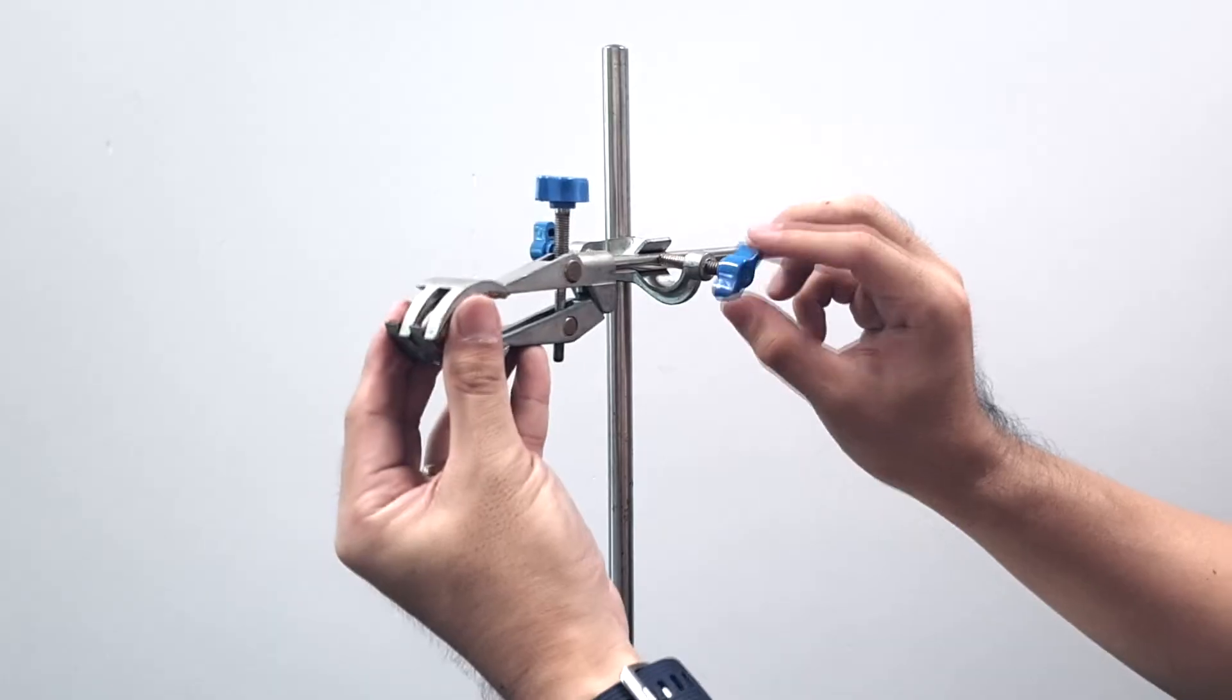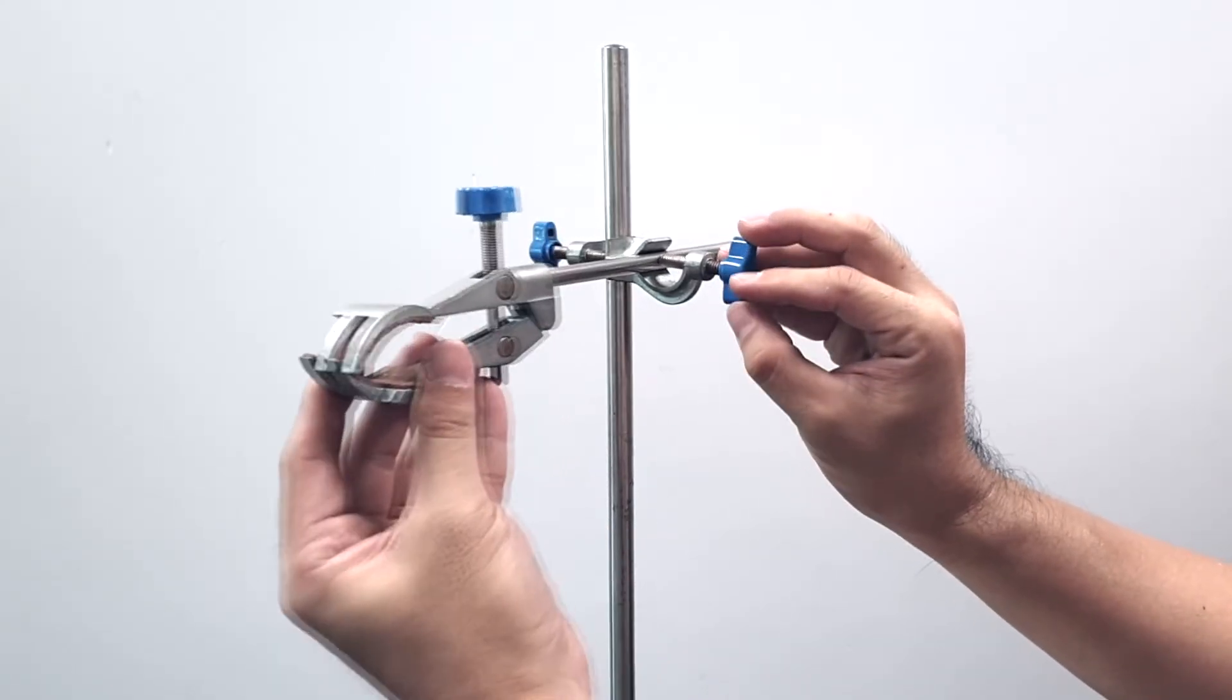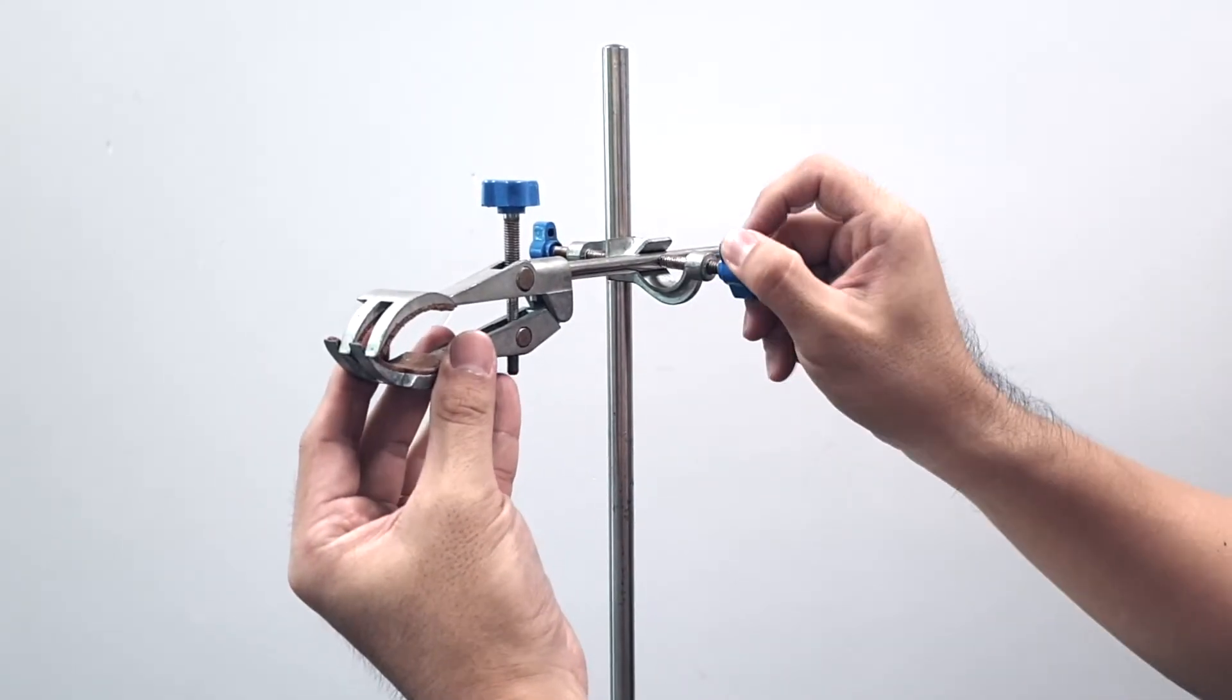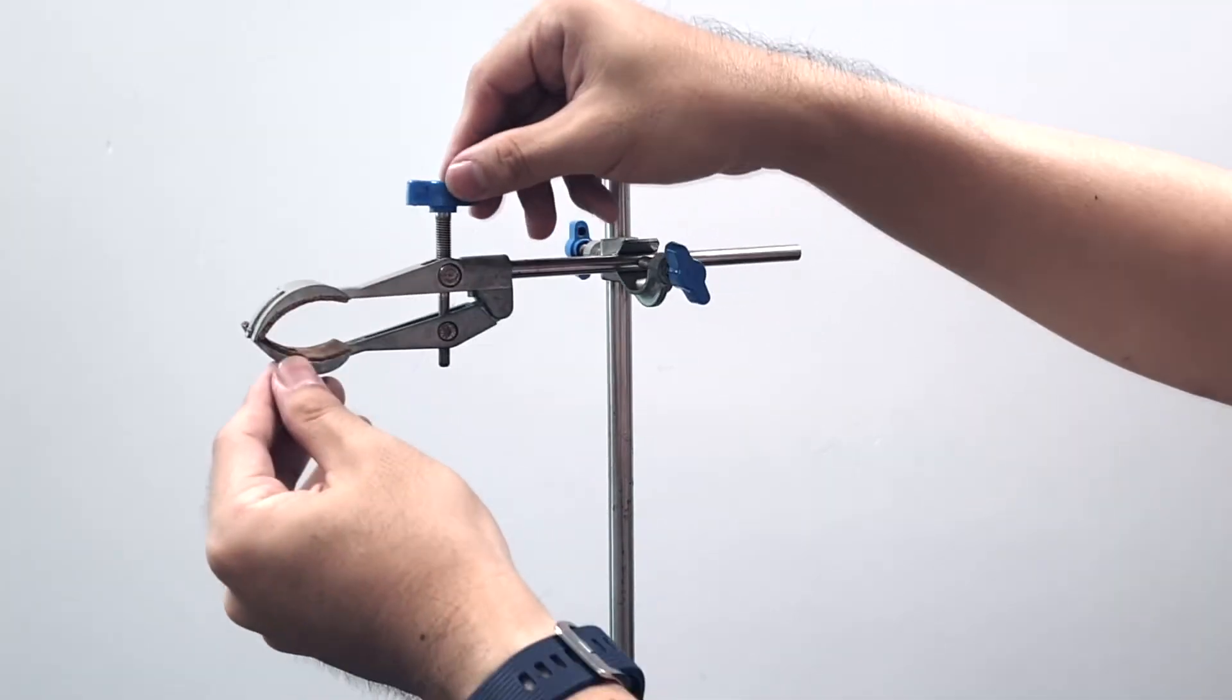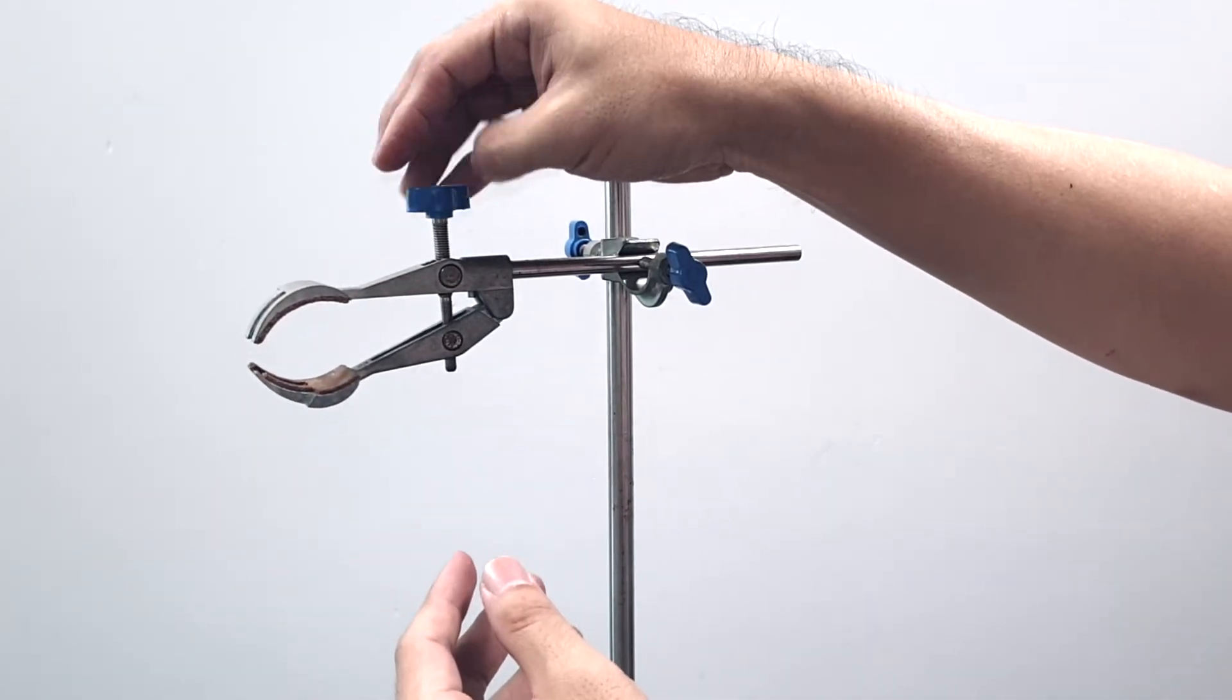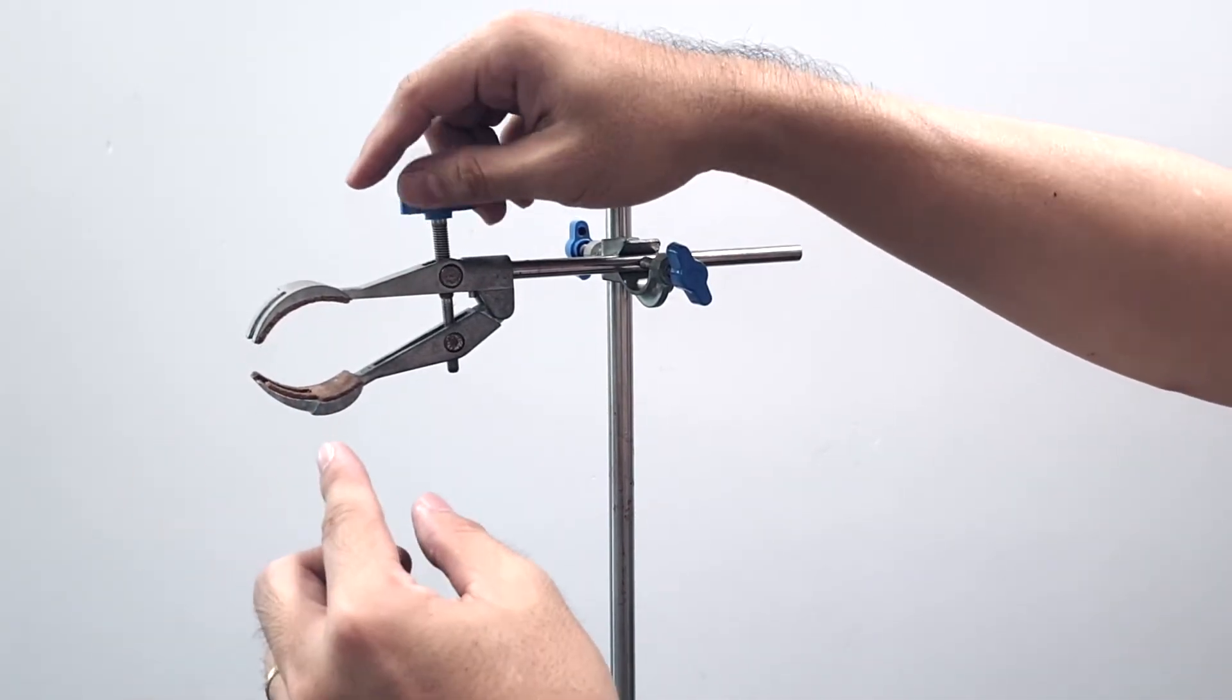You can actually adjust the length of the clamp to the desired distance according to the practical. And the top knob here allows you to open or close the jaw of the clamp.